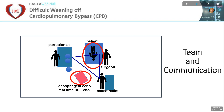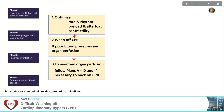One last comment about algorithms and difficult weaning of cardiopulmonary bypass. We all know the difficult intubation algorithm, including Plan A — mask ventilation and intubation, Plan B — supraglottic airway insertion, Plan C — waking the patient up, or Plan D — emergency front of neck access. During weaning of cardiopulmonary bypass, after optimising rate, rhythm, preload, afterload, and contractility, if there is still poor organ perfusion and oxygenation, we can always go back on cardiopulmonary bypass after optimised heparinisation.